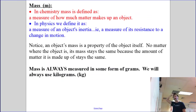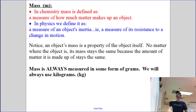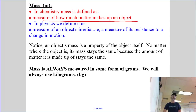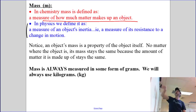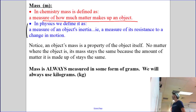In our last video, we talked about the definition of mass, just as a quick reminder. In chemistry, we define mass as a measure of how much matter makes up an object. And really, for all practical purposes, that's the best definition, because it helps you understand conceptually what it means.